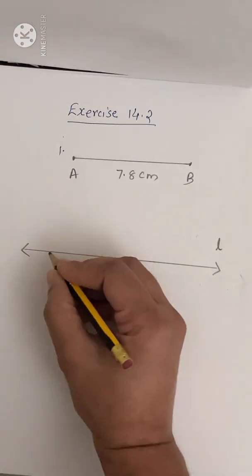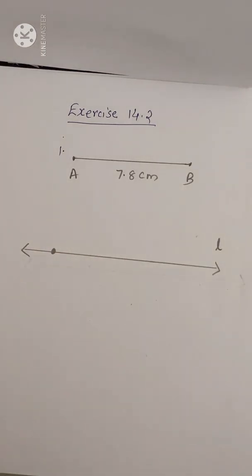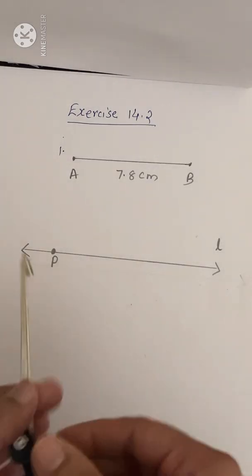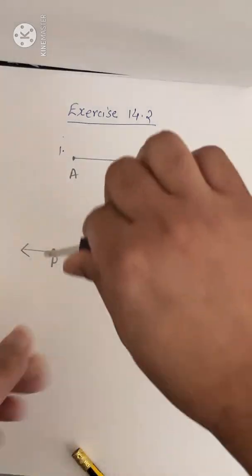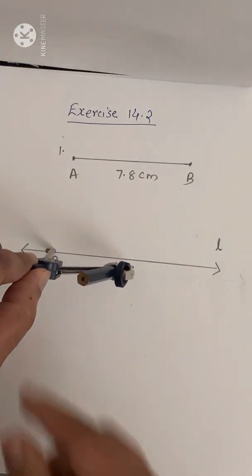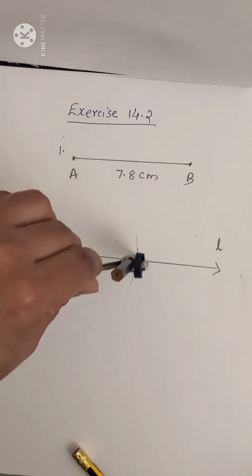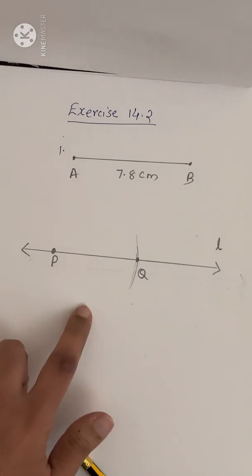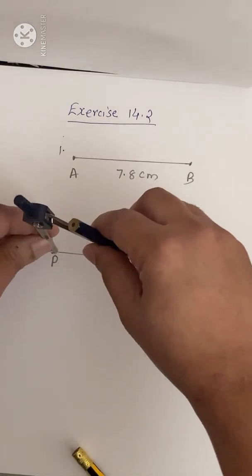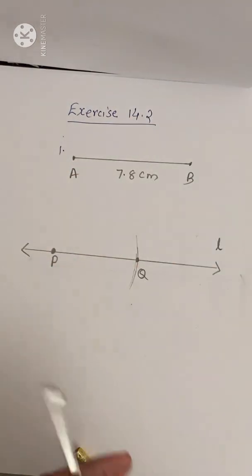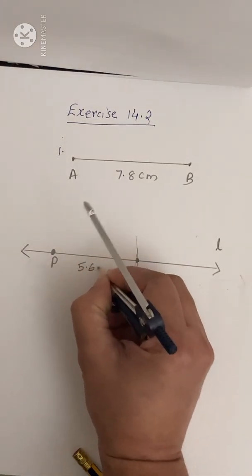Now mark a point — you can give any name, I am giving P. Place the compass pointer on P and swing an arc. Put this point as Q. Now you get your required line segment. Don't move the compass — if you move the compass the measurement will be wrong. Mark it as 5.6 cm.